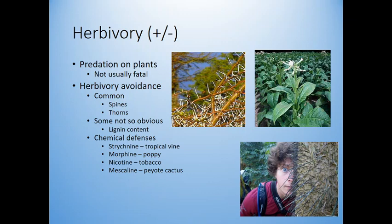Herbivory is another positive and negative interaction — it's pretty much predation on plants, but usually not fatal. A plant can survive getting eaten; it kind of has to, since it can't go anywhere. Thorns on a plant might prevent large herbivores from eating the leaves, but they won't do anything against small insects. Thorns might not work completely — they might just slow the organism down so it can't strip the whole tree of leaves quickly.